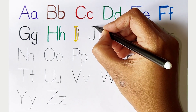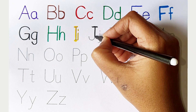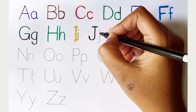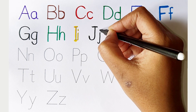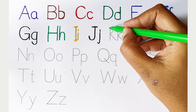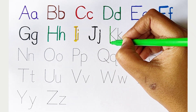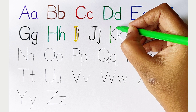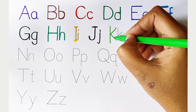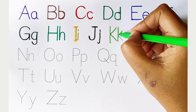J. Black color, capital J, small j. K. Light green color, capital K, small k.